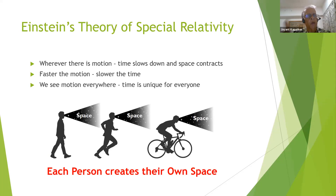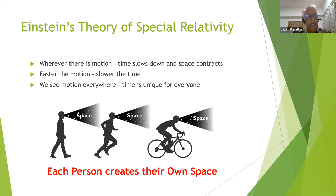Each one is creating their own space. If someone is walking and someone is running, their space is completely different — their time is clicking at different rates, their size is different. So they each have an independent space. This clearly shows that each one creates their own space, and this fact is proven by Einstein's theory of special relativity.